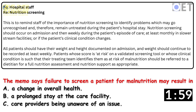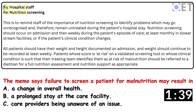The memo says: failure to screen a patient for malnutrition may result in — This is to remind staff of the importance of nutrition screening to identify problems which may go unrecognized and therefore remain untreated during the patient's hospital stay. Nutrition screening should occur on admission and then weekly during the patient's episode of care, at least monthly in slower stream facilities, or if the patient's clinical condition changes.